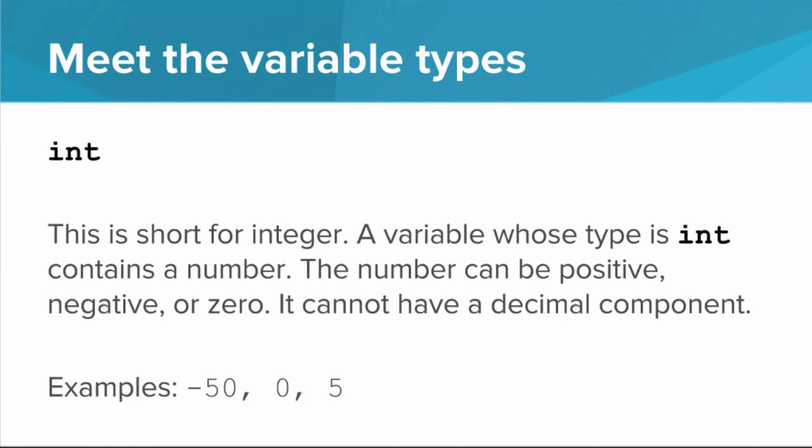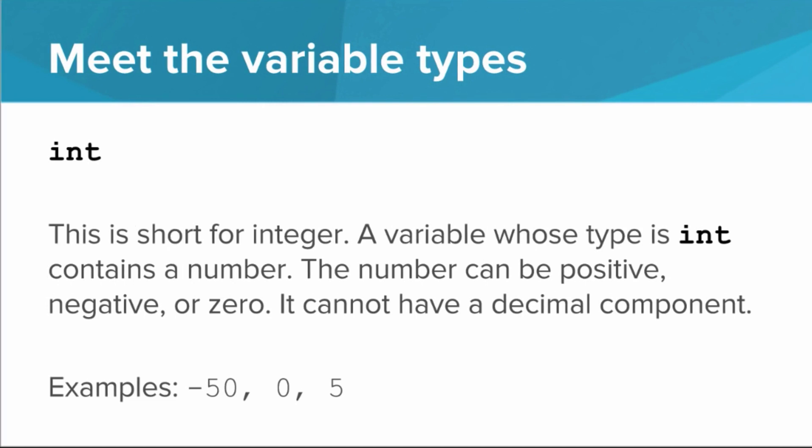Now let's look at the type int. Int is short for integer, and a variable whose type is int contains a number. And that number can be positive, negative, or zero. However, it cannot have a decimal component. So negative 50, zero, and five are all examples of integers.